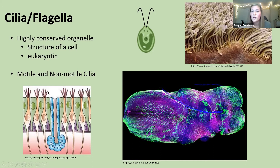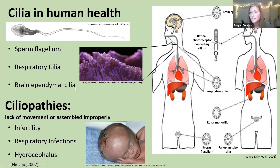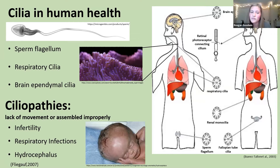Cilia are found almost everywhere in various organisms. But the reason we get funded is because cilia are very prominent in human health. A really big example is the sperm tail — the cilium allows sperm to travel to the egg for fertilization. We also have respiratory cilia that clear debris from your airways, and there are even cilia in your brain called ependymal cilia that move the cerebrospinal fluid. Defects in cilia can lead to a wide range of diseases — collectively termed ciliopathies — including infertility, respiratory infections, and hydrocephalus.